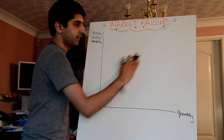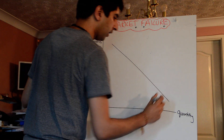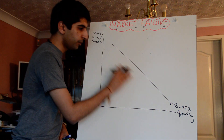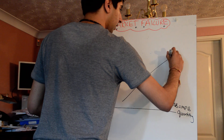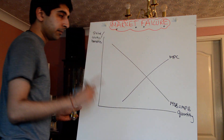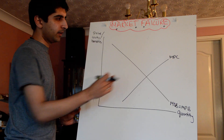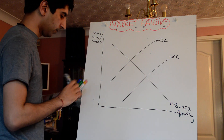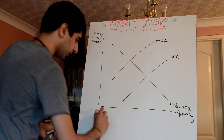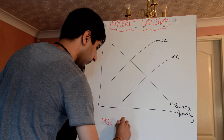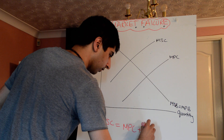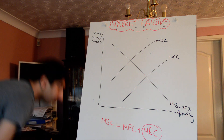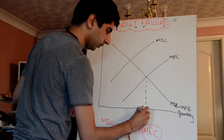For negative externalities, we're assuming no positive externalities, so the marginal social benefit curve equals our marginal private benefit curve. We also have our marginal private cost curve, but because negative externalities are occurring, there's a discrepancy between marginal private cost and marginal social cost. The equation to remember: marginal social cost equals marginal private cost plus marginal external cost. We're including the external costs. As a result, the market produces at point Q and prices at point P.